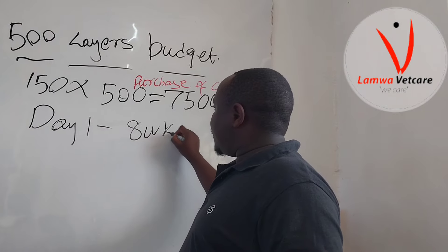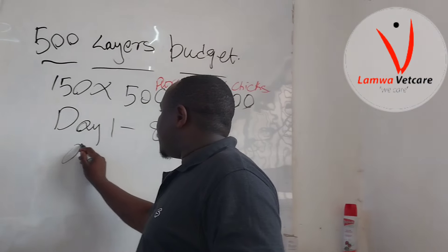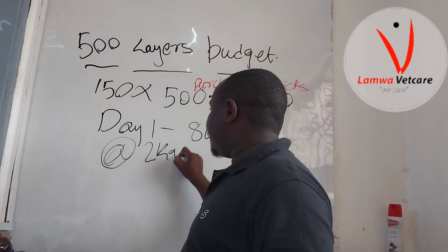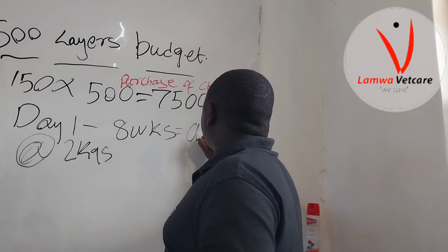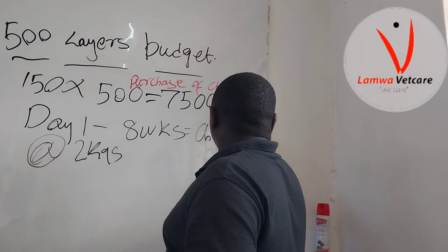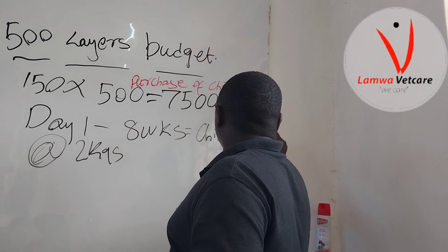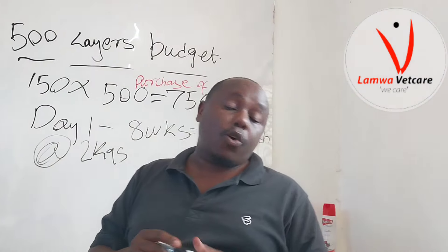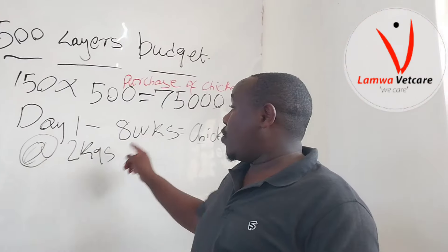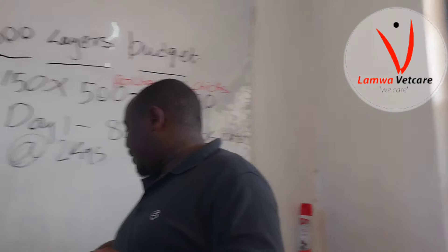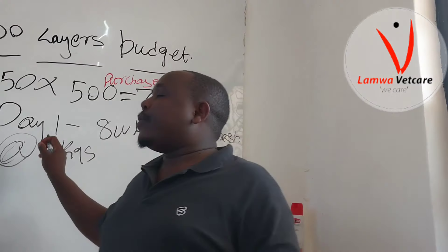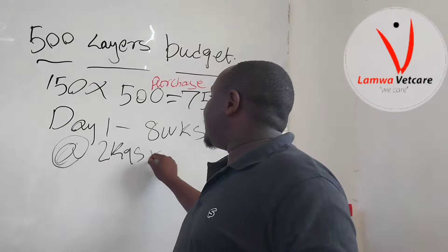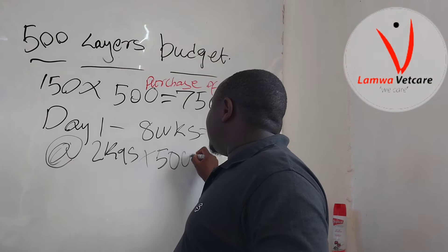From day one to eight weeks, each bird consumes 2 kg of a feed called chick mash. Chick mash comes in the form of crumbs or mush. With 2 kg per bird consuming over two months, this gives us a total of 1,000 kg.